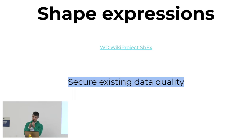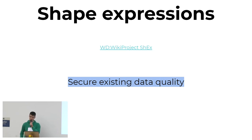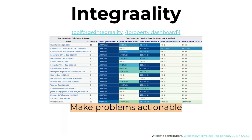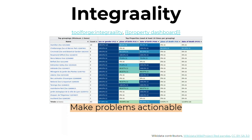We also have shape expressions — Andra or Jose are going to talk more about those — but basically it's a very powerful way of comparing the data you have against a schema: what statements should certain entities have, what other entities should they be linked to, and what should those look like. And then you can find problems that way. There's also the Wikidata integrity dashboard, which gives you a quick overview of the data you already have.